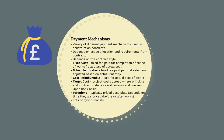Target cost contracts are different again. There is typically a target cost to complete the works, and the principal and contractor share profits and losses — this is called a pain-share-gain-share model. The principal and contractor work together to determine the target cost, then share savings and losses. This is the payment mechanism used on alliance-type contracts, which we will discuss in more detail later in section 3.